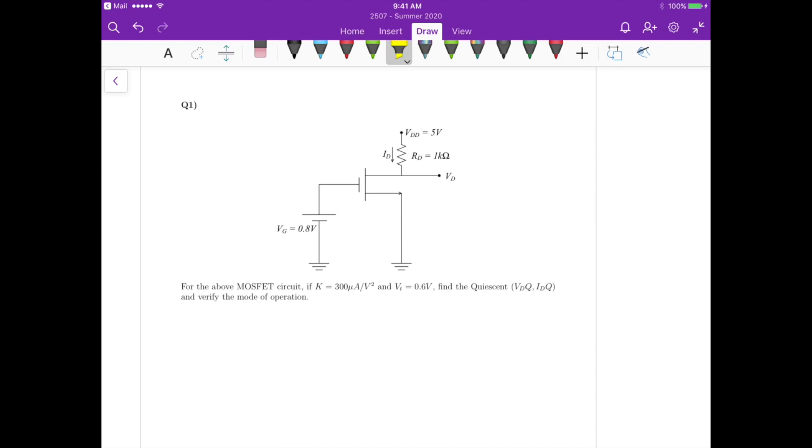Hi everyone, this is set 5, question 1. So for this MOSFET circuit, we have that the transistor transconductance is 300 microamperes per volt squared, the threshold voltage is 0.6 volts, and we need to find the quiescent point, Vdq, Idq, and verify the mode of operation.